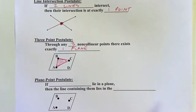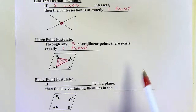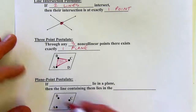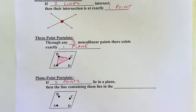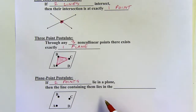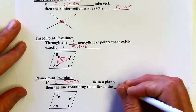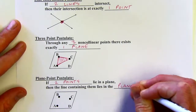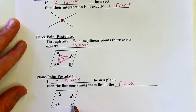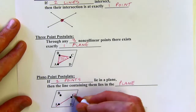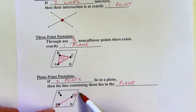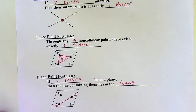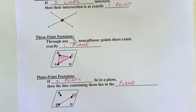The plane-point postulate: if two points lie in a plane, then the line containing them also lies in the plane. For example, points A and C are on plane D, so that means line AC — the entire line — would be on that plane. The line goes on forever in both directions, and the plane goes on forever in all directions, so that entire line would be on the plane.